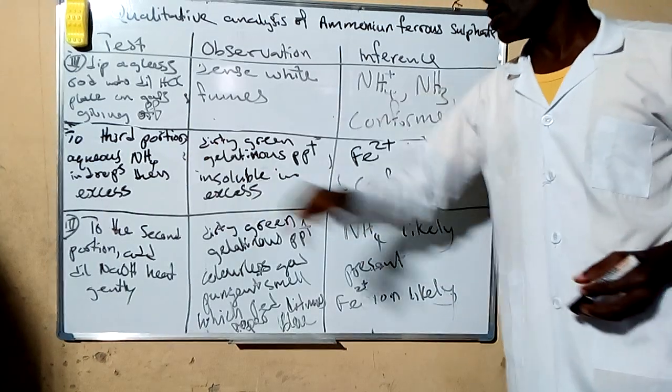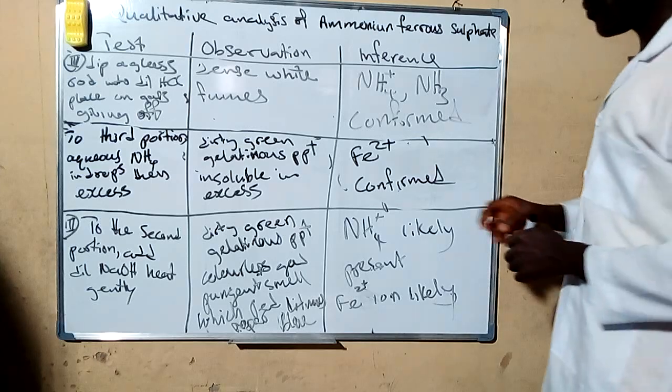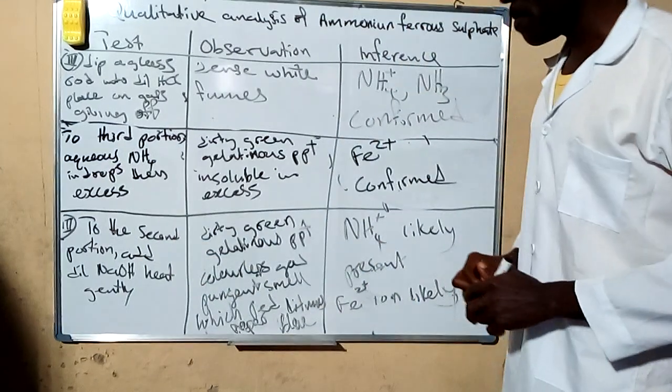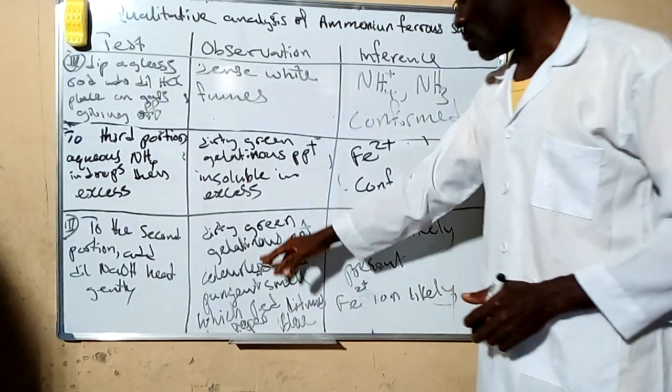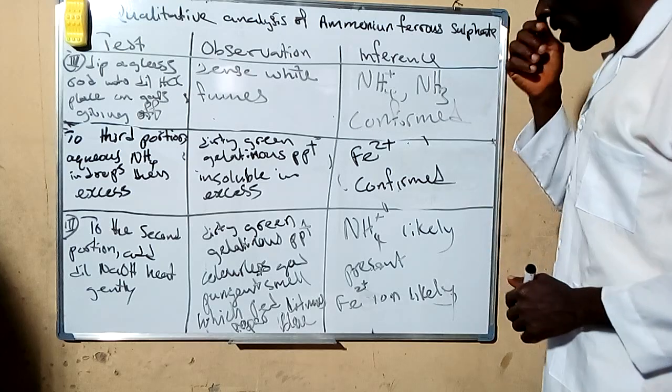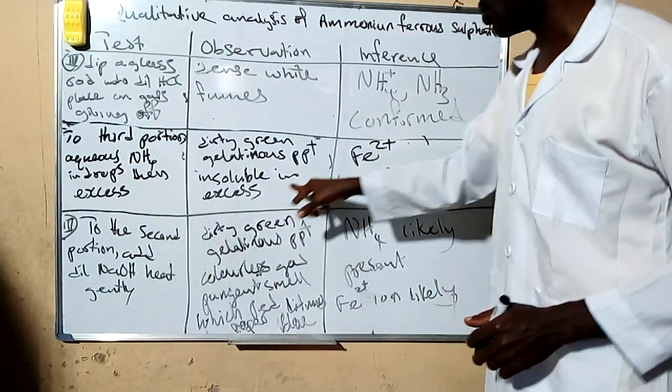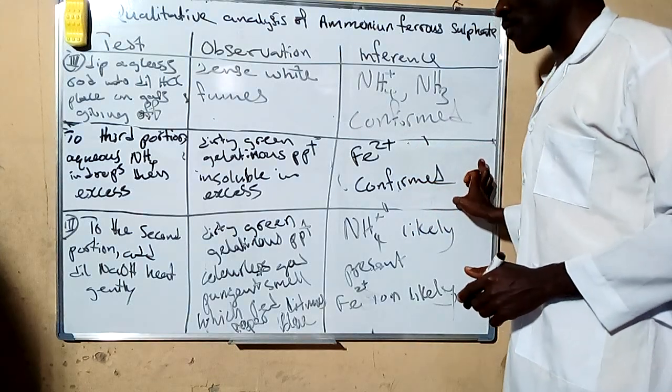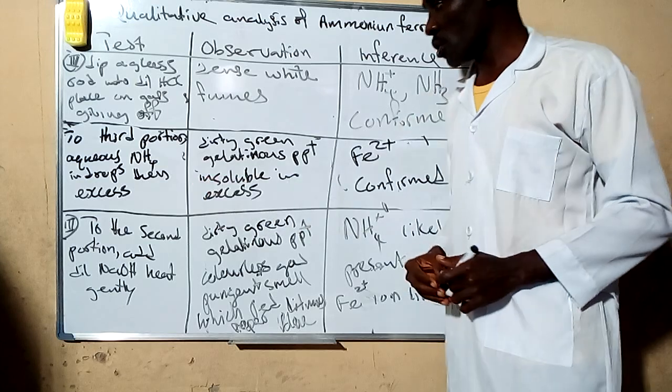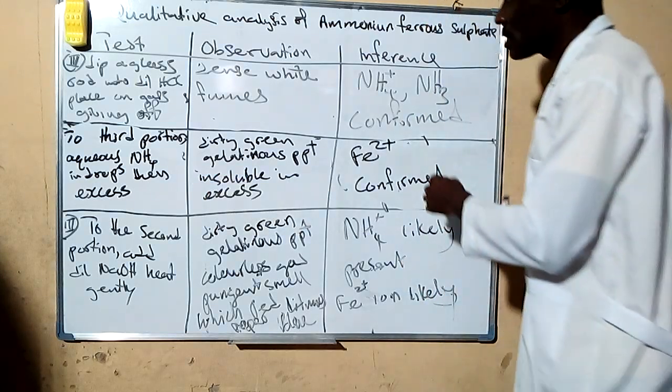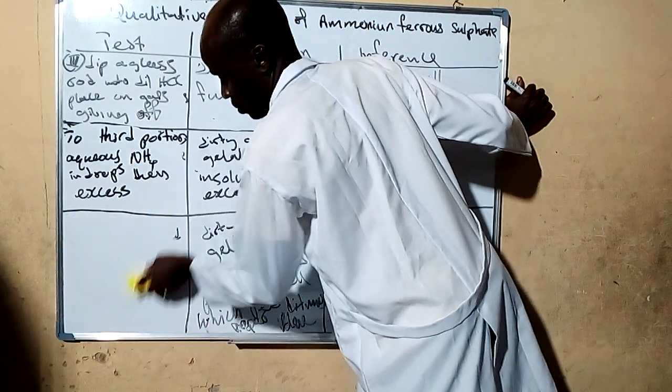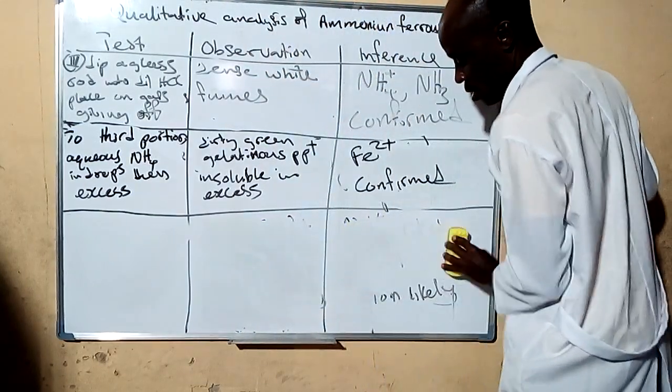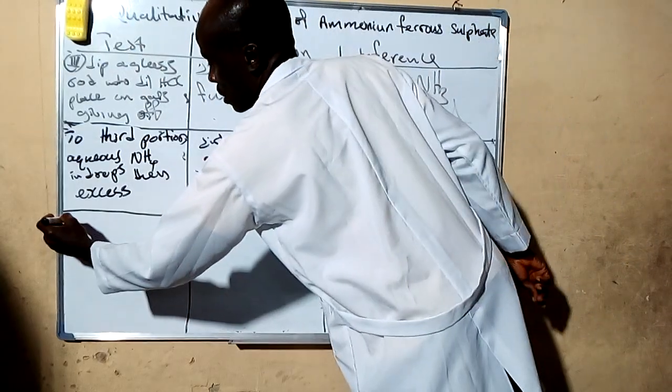This similar test can also be carried out with sodium hydroxide. When we want to test for the ammonia, the addition of ammonia solution or sodium hydroxide gives you the same similar observation and you can as well use it to confirm it.